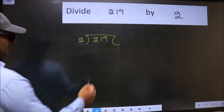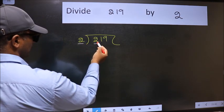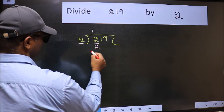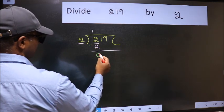Next, here we have 2, here also 2. When do we get 2 in 2 table? 2 1's 2. Now we should subtract. We get 0.